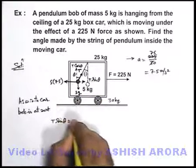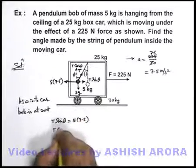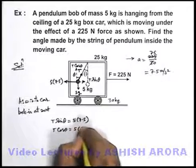T sine theta is equal to 5 into 7.5, and T cos theta can be written as 5 into g, that is 5 into 10.